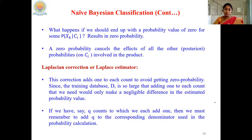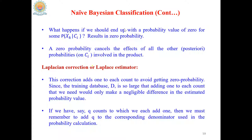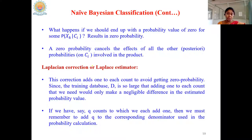There exists a method proposed to avoid such situations — that is the Laplacian correction, also called the Laplacian estimator. What it says is: if there exists a zero probability for any one of the probabilistic values, just add one to each and every count, so that we can avoid the zero probability cases.